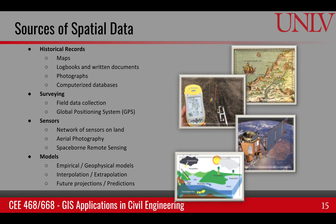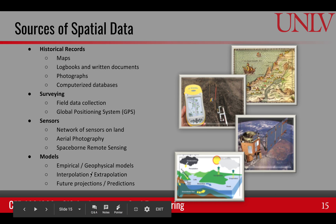The sensors that provide data to GIS include the network of sensors on the ground that are continuously relaying information, such as temperature or other ground variables of interest. Or it can be aerial photography from airplanes or space-borne remote sensing using satellites. The models are where we take the known information and create new information — these could be empirical models or models based upon some geophysical phenomena.